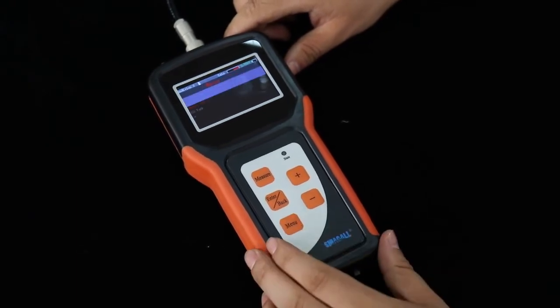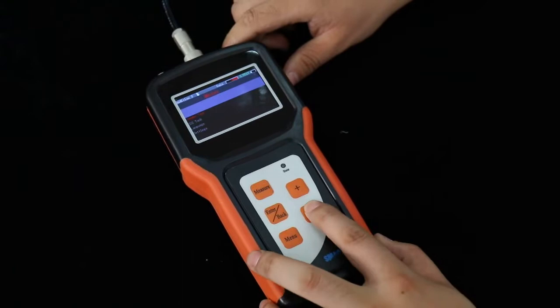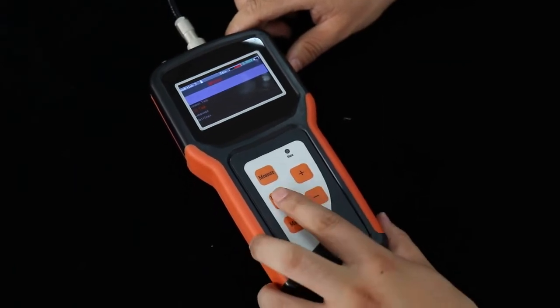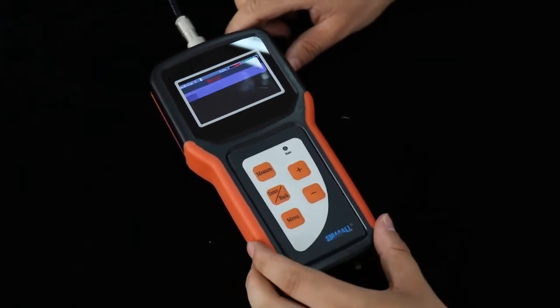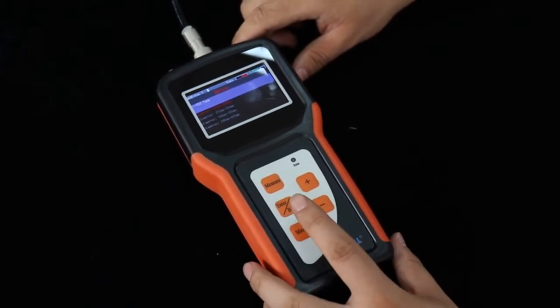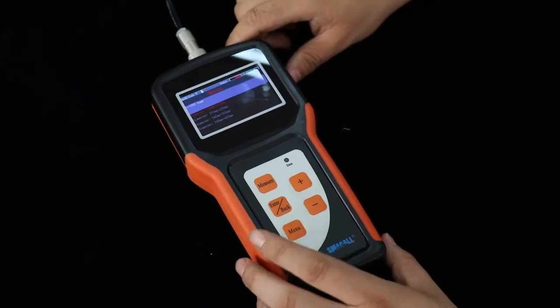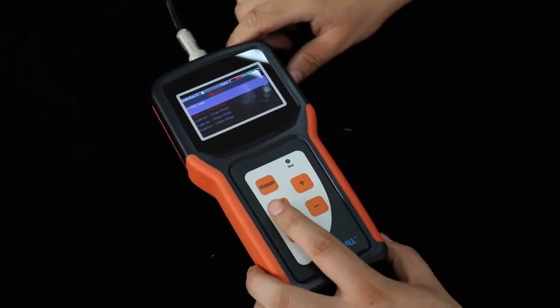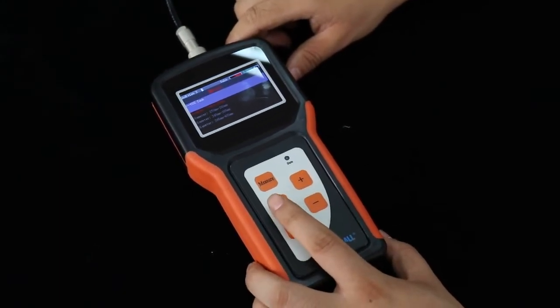In order to access the main interface, press the menu button and select CO2 tank. Then, with the plus or minus buttons, select the corresponding size of the tank you wish to measure. Once you select the correct size, press the enter or back button.